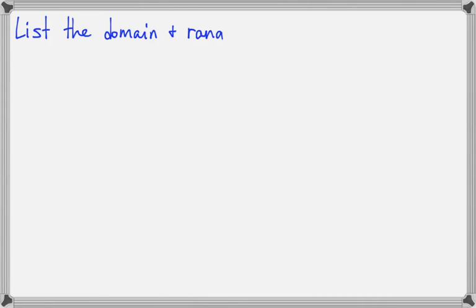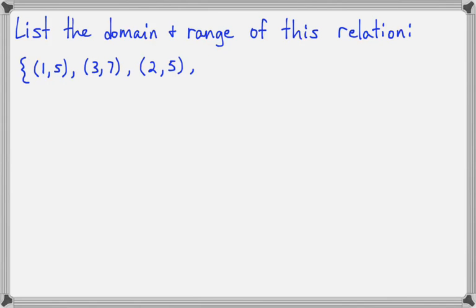So there are those definitions, and let's go ahead and look at a relation and list the domain and the range. Here is our first relation, and it is simply a set of ordered pairs. If I want to list the domain, I know that ordered pair means that the x values come first and then the y values.